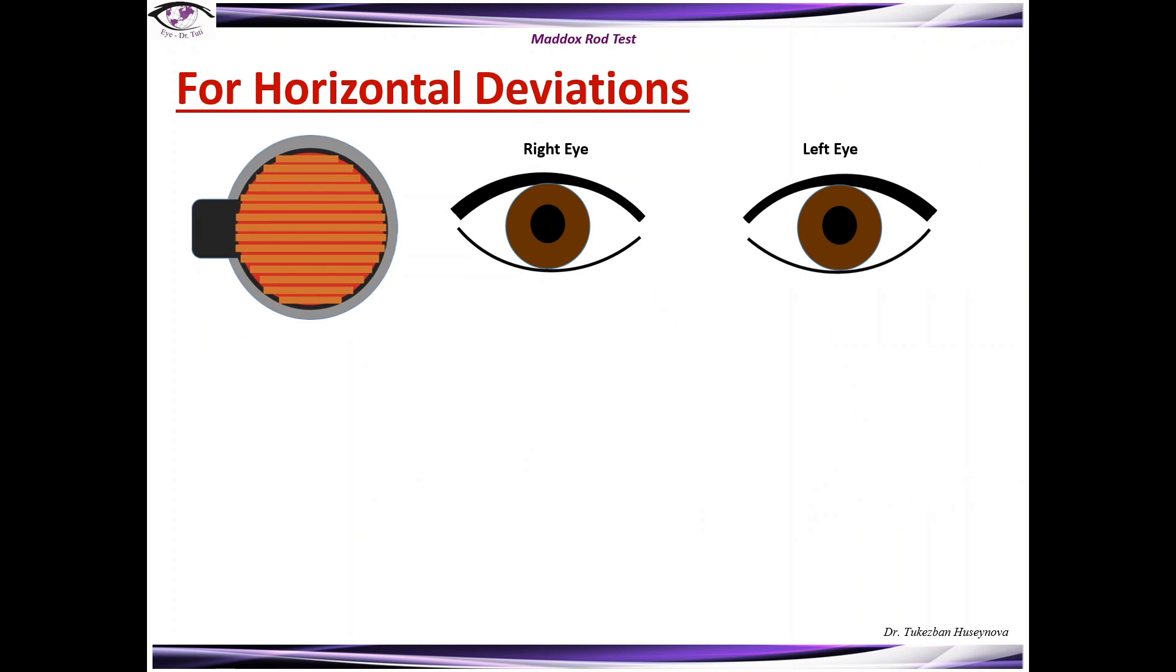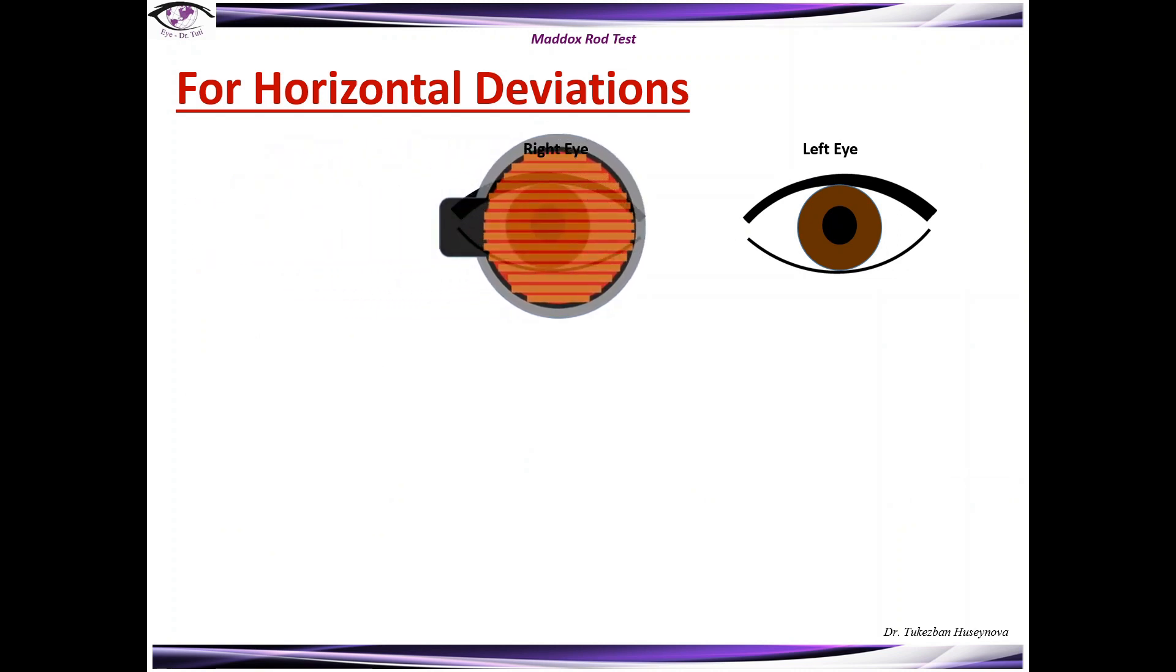Let's start with horizontal deviations. We put the glass in the horizontal way and if the patient says that he sees the light in the middle of the red line, this is orthophoria.